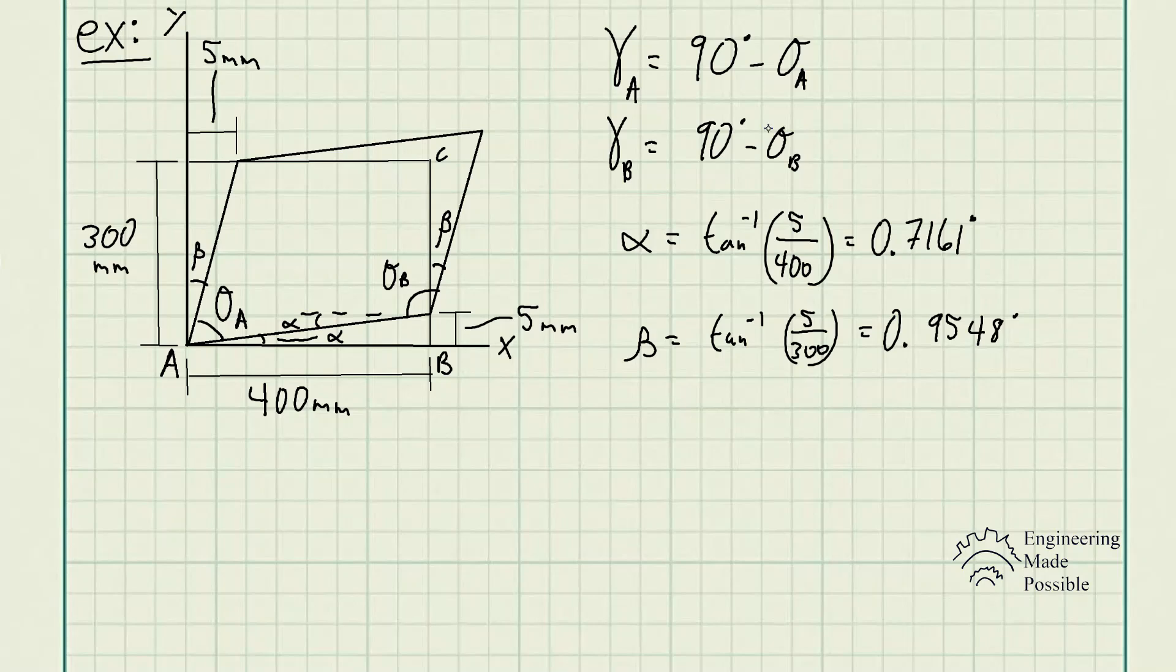Now, with this information, alpha and beta, we're actually able to determine theta A and theta B. Theta A is equal to 90 degrees, which was its original angle. But we subtract alpha and we subtract beta. So theta A gives us 88.3289 degrees.